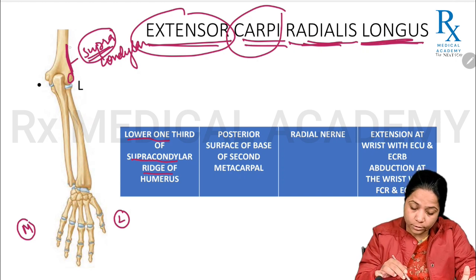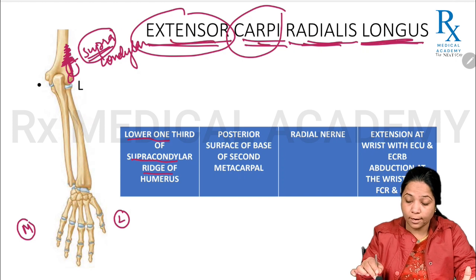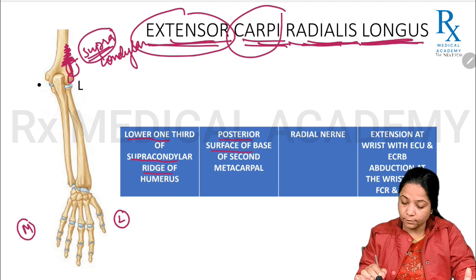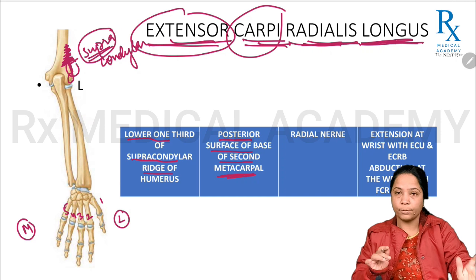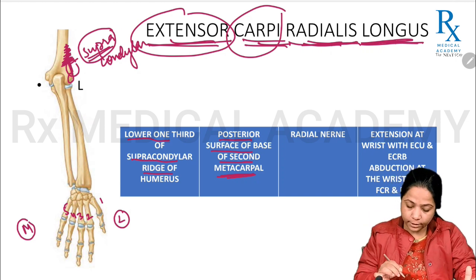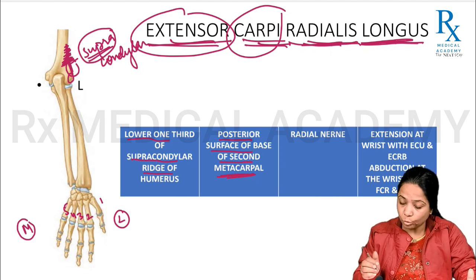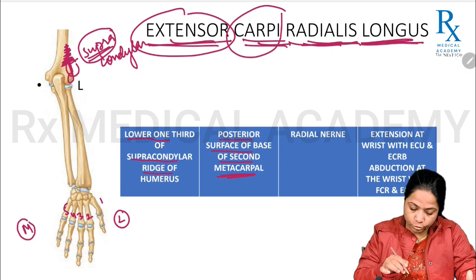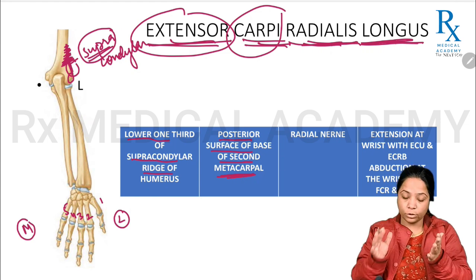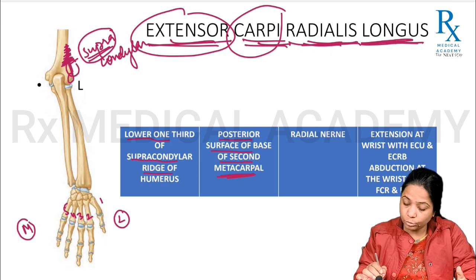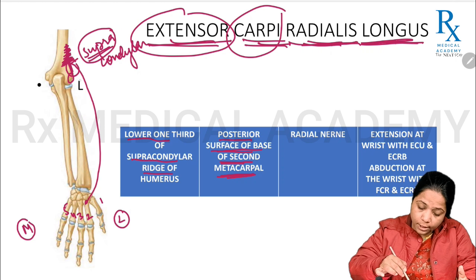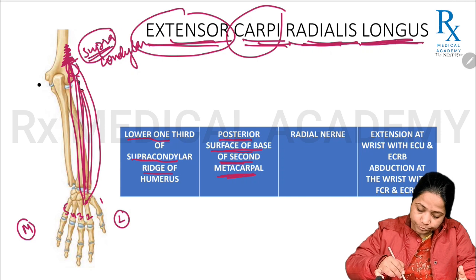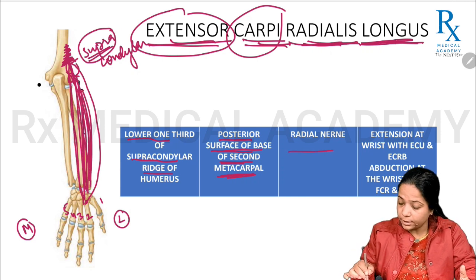From the upper two-thirds of the supracondylar ridge arises the brachioradialis, and from the lower one-third arises extensor carpi radialis longus. This muscle inserts onto the posterior surface of the base of the second metacarpal. There are five metacarpals in the palm and hand region; this muscle inserts onto the dorsal surface of the base of the second metacarpal, as seen in this posterior view of the upper limb bones.